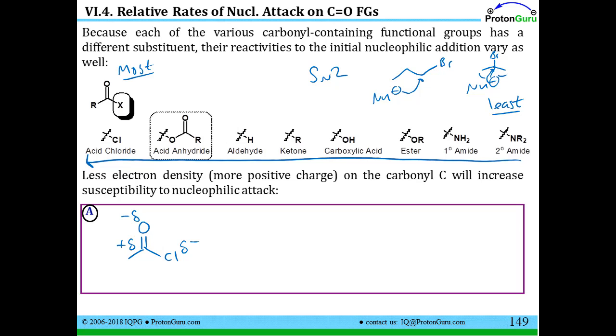Some people might think, what about the lone pairs on chlorine? Won't those donate? Remember back in section four where we learned about the electron donating abilities or the electron accepting abilities of different groups.